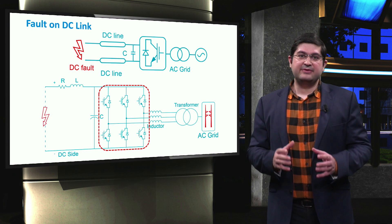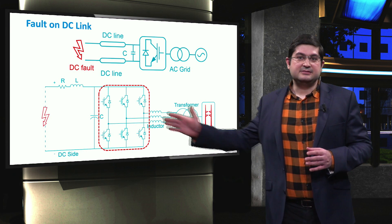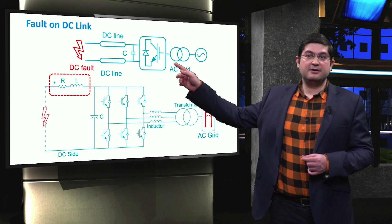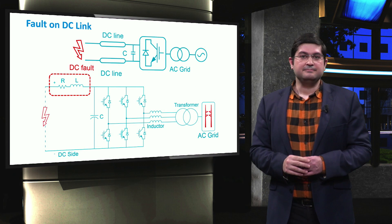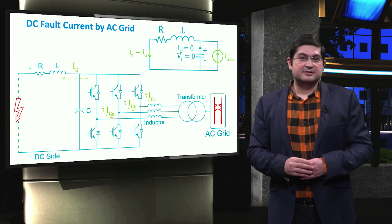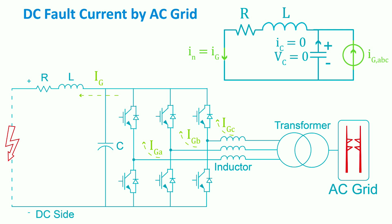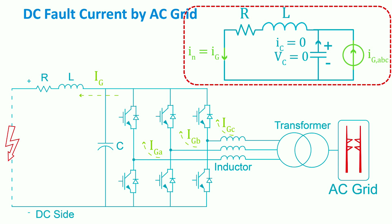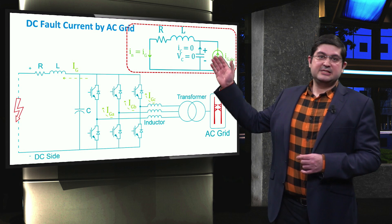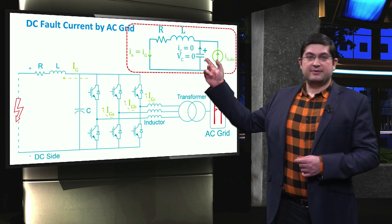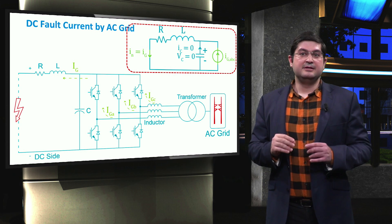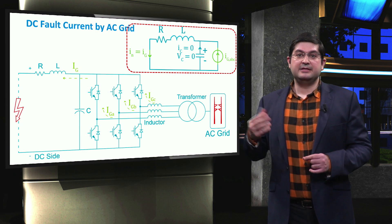Here we assume that a three-phase three-leg converter is used to supply the DC side, where the line is represented by the resistance R and the inductance L. During the fault at the DC side, various elements contribute to the fault current. The first evident element is the grid, where the currents of phases A, B, and C pass through the electrical switches and the freewheeling diodes. The simplified equivalent circuit shows the grid represented by a current source, shown in green. In this equivalent circuit, we do not consider the current and voltage of the capacitor, as it is described in the next slide.